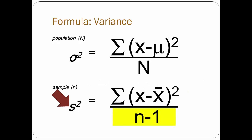Now look at the denominator. A small n is the symbol for the number of observations in a sample data set. If you have 10 scores, then the sample size, the n, equals 10. And by following the formula, you'll subtract 1 from the number of observations in the data set. So if your data set consists of 10 scores, you would divide by 10 minus 1, or 9.